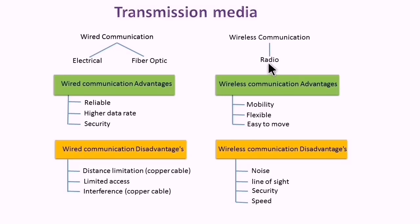Wired communication is more reliable and can run at higher speed relatively compared to wireless. The security is better because it is harder for a cyber attack to connect to this network as physical connection is required.